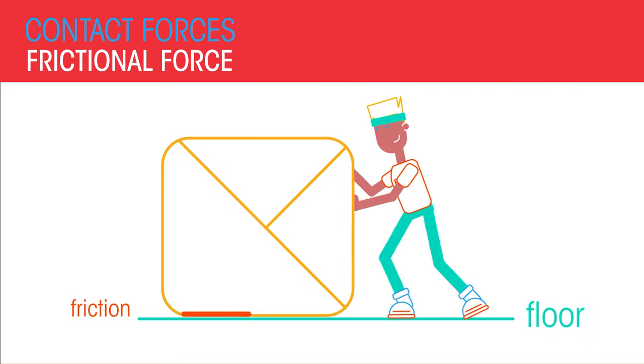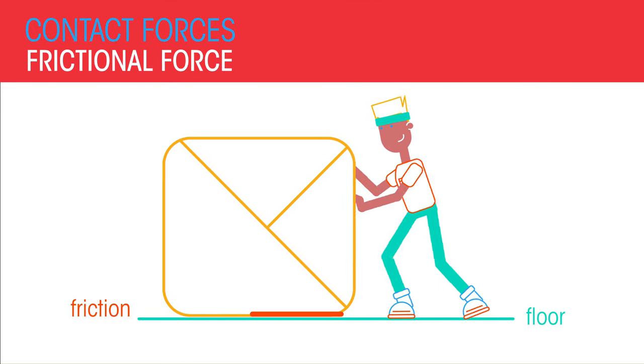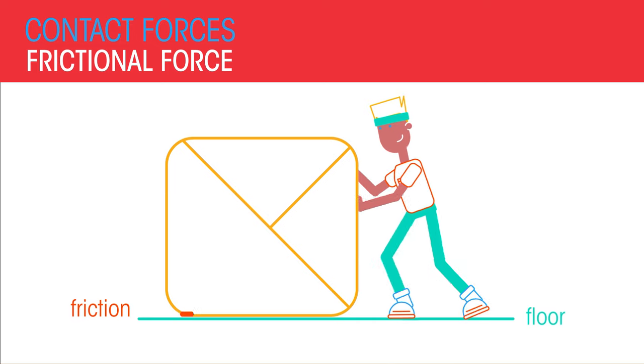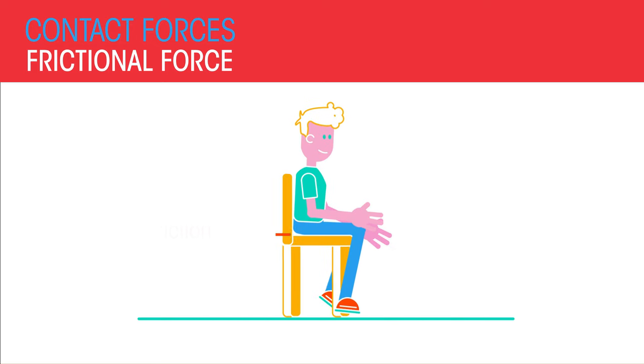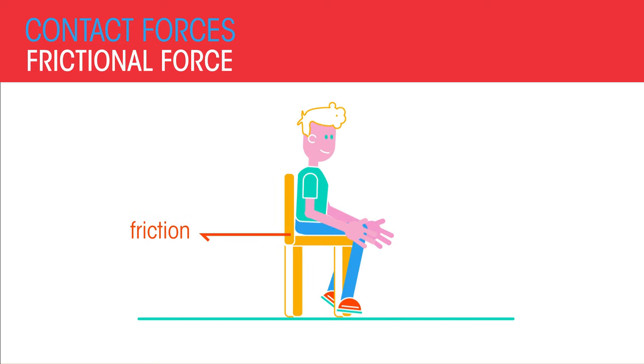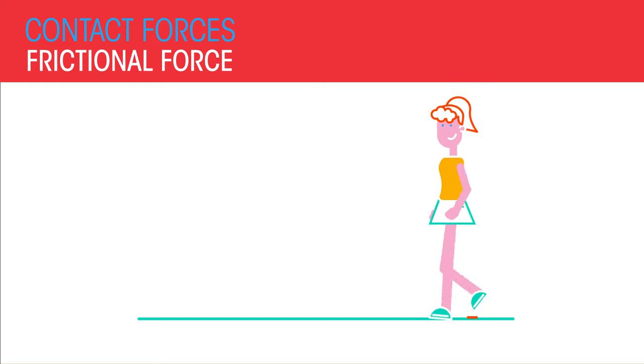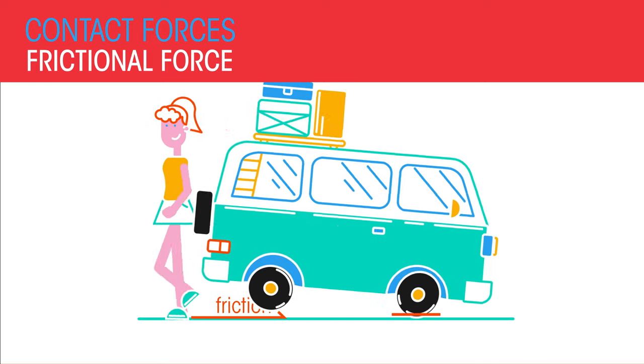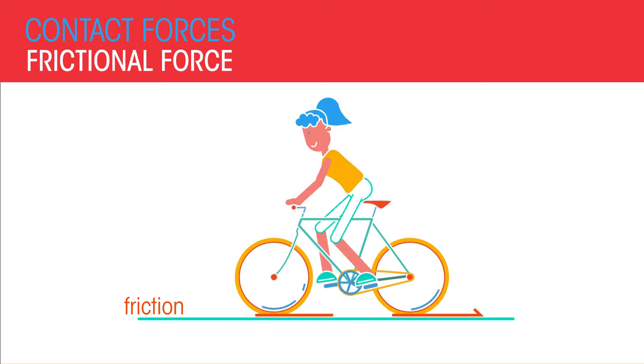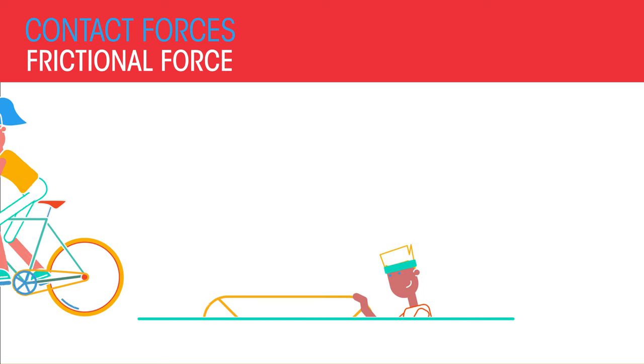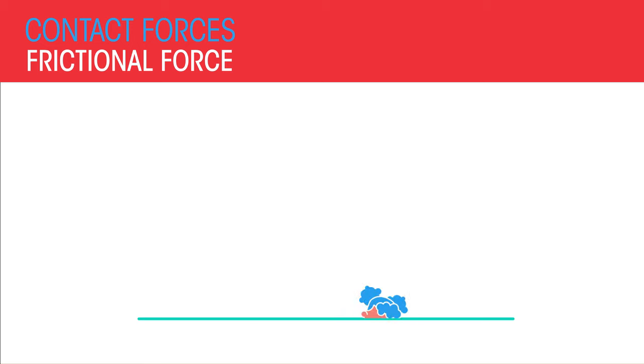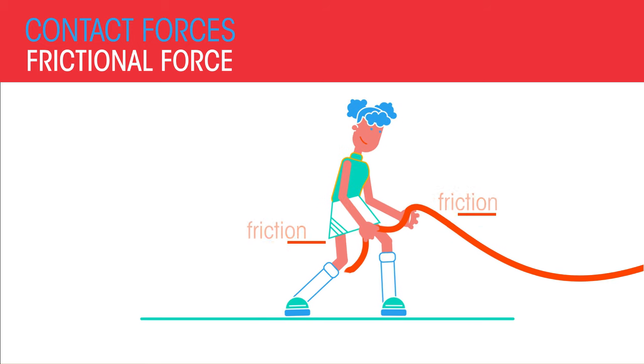Friction exists between two things that move over each other. Sometimes friction is useful, sometimes it's not. Friction stops you slipping off your chair. It stops you falling over when you walk. We rely on friction to slow us down when we're driving a car or riding our bikes. But friction also makes things hard to push and gives us rope burn.